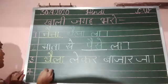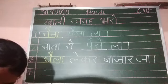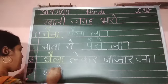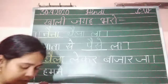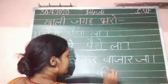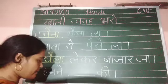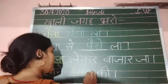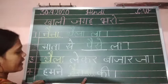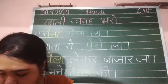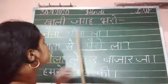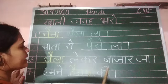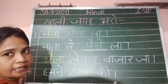Number 4 and last: 'ta par aa ki maatra' — ta, 'la par aa ki maatra' — ra, 'ta par i ki maatra' — ki. So the answer is हमने तैरा की की (hamne taira ki ki). Now everyone speak with me: नैना थैला ला, माता से पैसे ला, थैला लेकर बाजार जा, हमने तैरा की की.